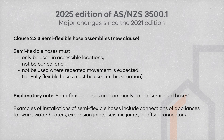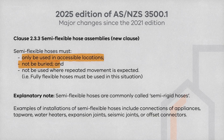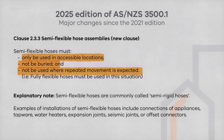Clause 2.3.3 is a new clause which expands on the requirements of semi-flexible hose assemblies. Similar to flexible hoses, semi-flexible hoses must only be used in accessible locations, must not be buried, and must not be used where there is expected repeated movement. Semi-flexible hoses are commonly called semi-rigid hoses. Examples of where these connections may occur include connections to appliances, tapware, and water heaters.